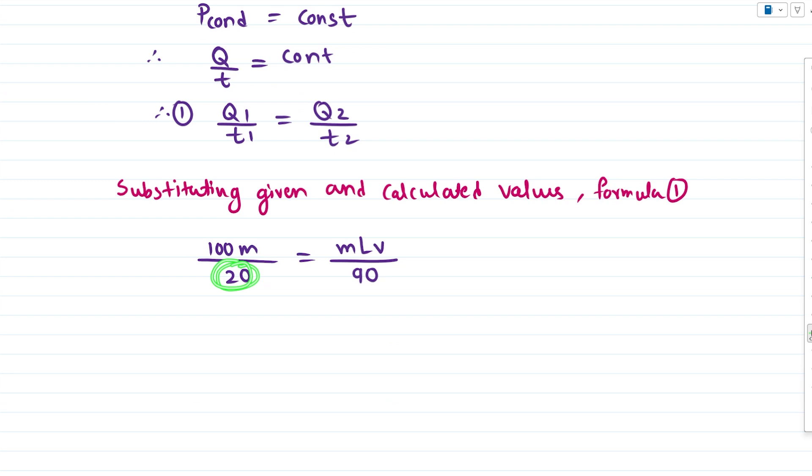Now before we proceed, some of you might be like don't you think that we should convert times from minutes to seconds? Ideally yes, but we are doing smart work here. If we convert 20 minutes to seconds it would have been 20 into 60, similarly 90 minutes would have been 90 into 60, but eventually both cancel out. So to save some calculation trouble, we are not going to convert these values because we know that at the end they cancel out.